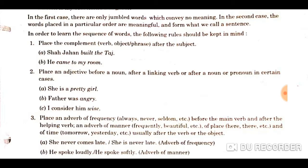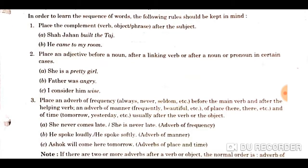The next rule is: place an adjective before a noun. But if we have to place an adjective after a linking verb, then place the adjective after the linking verb. Also after a noun or pronoun in certain cases. For example: 'She is a pretty girl.' Here the noun is 'girl' and 'pretty' is the adjective, so the adjective has been placed just before the noun.